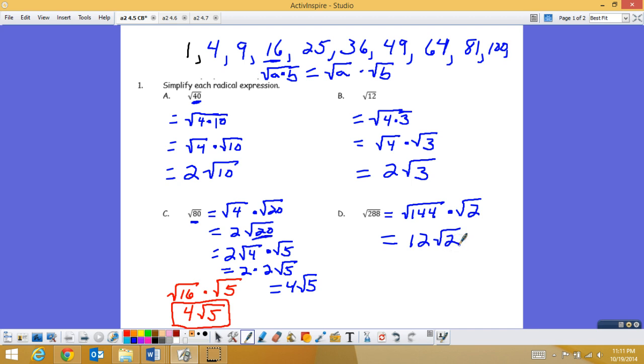And again, for example, if you didn't see that that was 12 right away, you could have started with 4. That's square root of 4 times the square root of 72. So that's 2 square root of 72. And 72, the largest perfect square that goes into 72 is 36. And the square root of 36 is 6 times 2 is 12 square root of 2. So sometimes you've got to do it more than once.